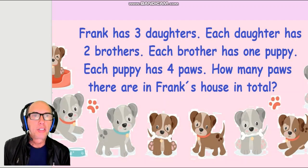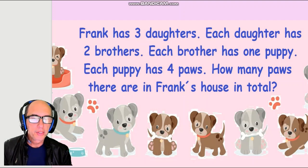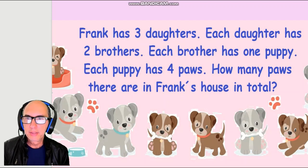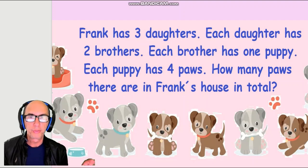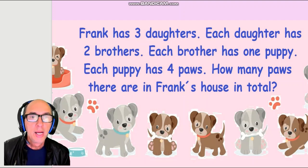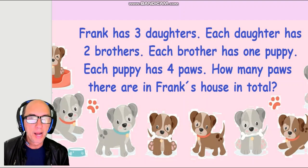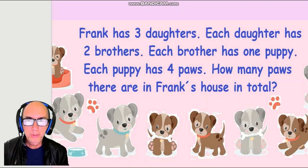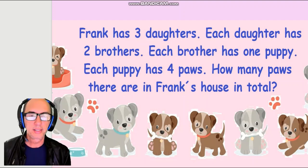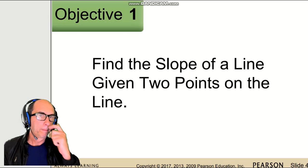Welcome back to our intermediate algebra course. Today we will talk about section 3.4, the slope of a line. But first, think about this challenge: Frank has three daughters, each daughter has two brothers, each brother has one puppy, and each puppy has four paws. All healthy puppies. Write down your answer on paper and we will check at the end of this section.